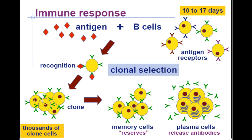This is a great example of positive feedback: having an antigen results in cloning, which results in more B cells binding to more antigens, which results in more cloning. This is positive feedback — we don't see that as much as negative feedback in nature.